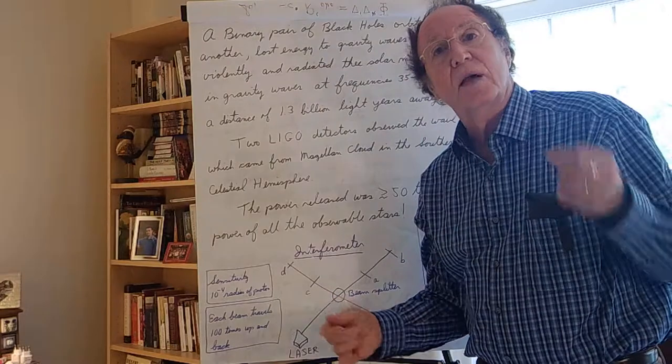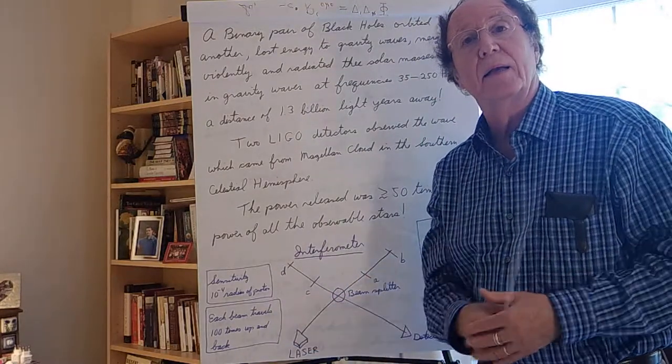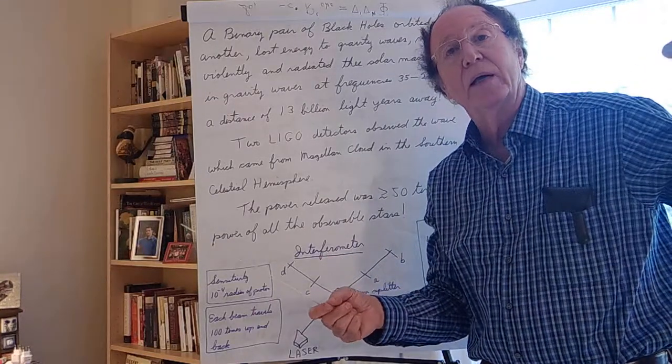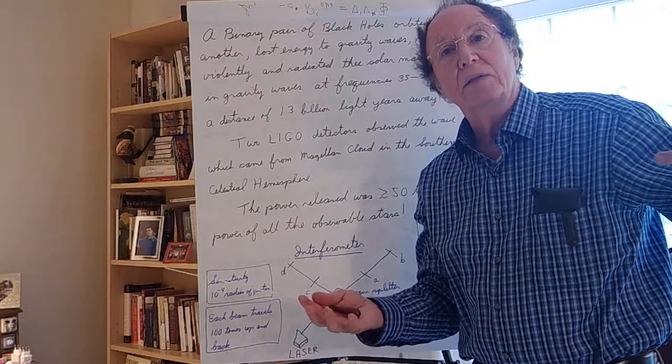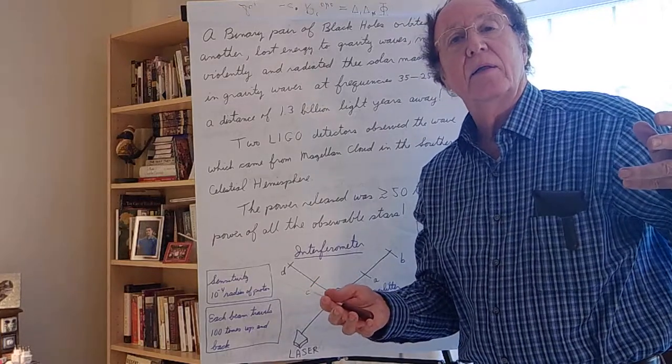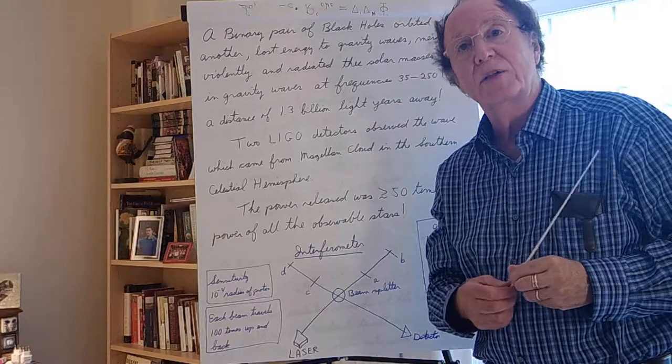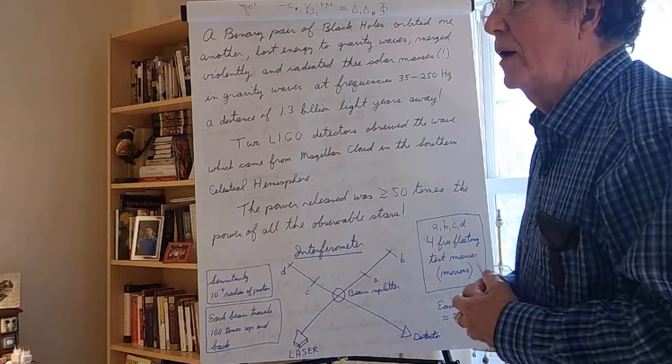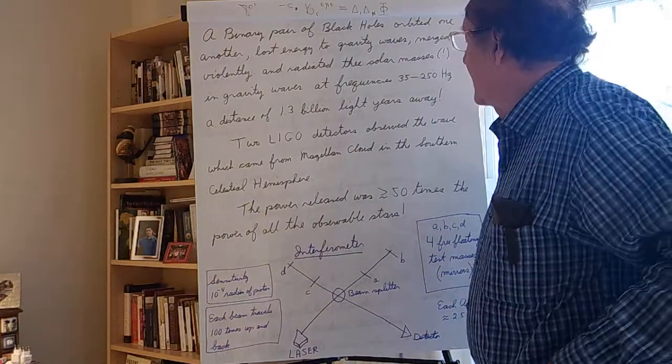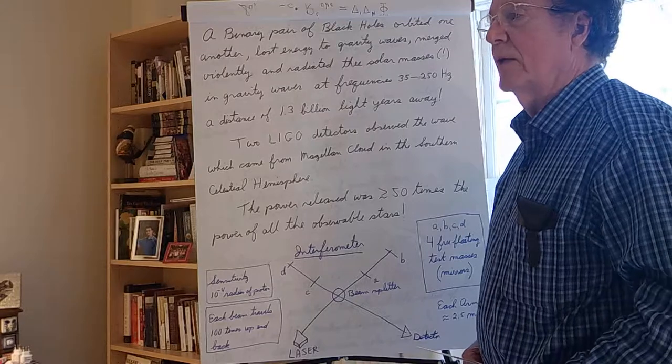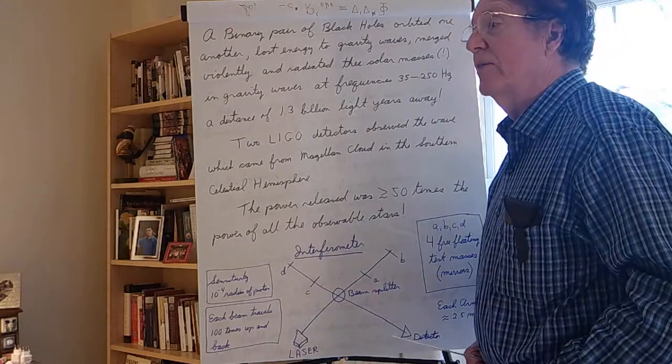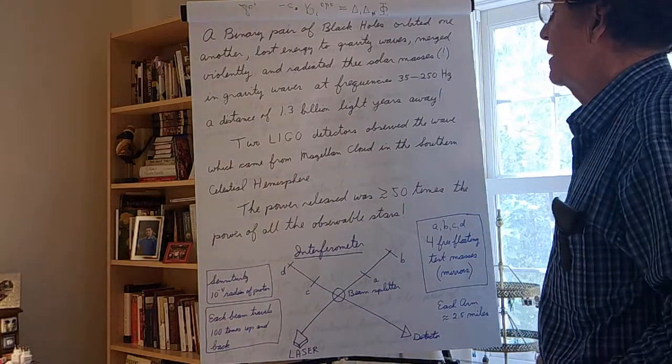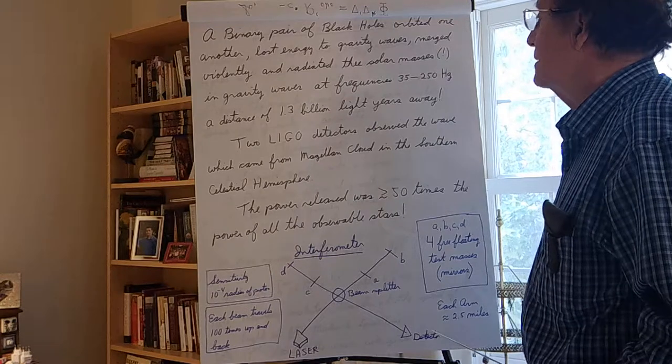That's because there were two detectors. There was one in Louisiana and then there was one in Washington State. And between the two of them, knowing the time delay between the detection of the gravity waves, they could approximate the direction. And with the detection of spiraling neutron stars, where the gravity waves are accompanied by electromagnetic waves as well, you can get much better ideas of what you're looking at. You make a detection, you tell all the telescopes in the world to look in a certain direction. There's merging neutron stars in such a direction. They find them.